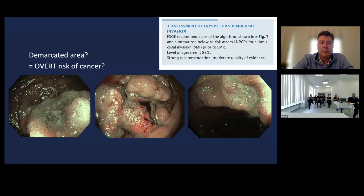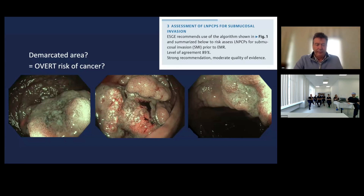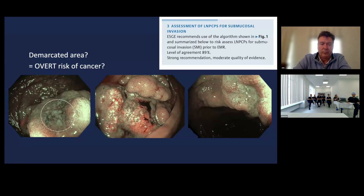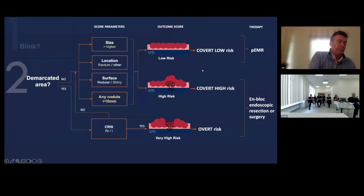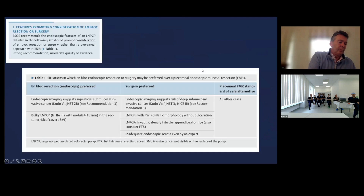How do you assess a large non-pedunculated polyp for submucosal invasion? Use the algorithm that we have outlined yesterday and which we will discuss in detail later: look for a demarcated area, characterize that demarcated area, and if it does not exist, assess for risk of buried cancer.